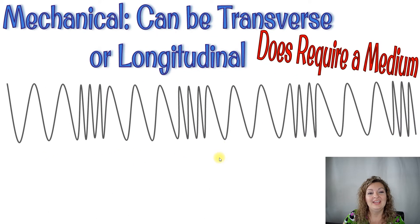Now let's go to mechanical waves. Mechanical waves are unique because they can be a transverse wave or they can be a longitudinal wave. They can be either or. Now they do require a medium in order to travel though.